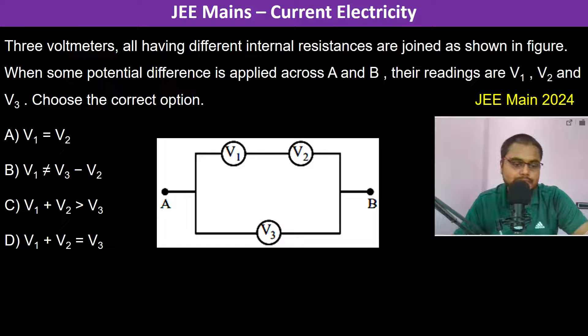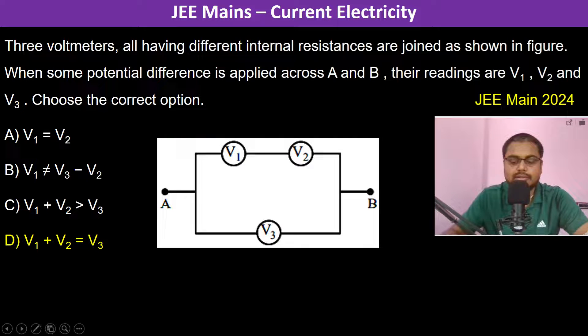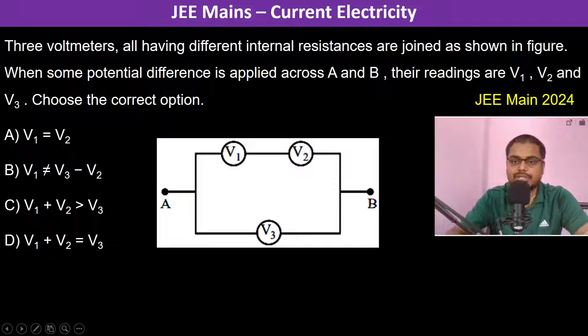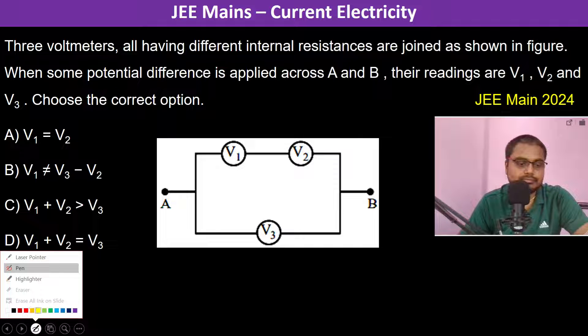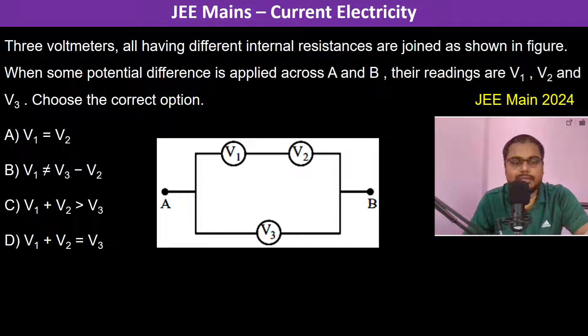Three voltmeters, all having different internal resistances, are joined as shown in the figure. When some potential difference is applied across A and B, the readings are V1, V2, and V3. Choose the correct option.